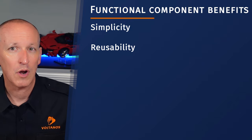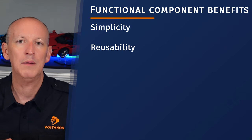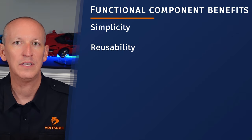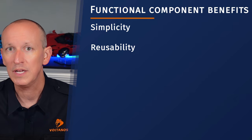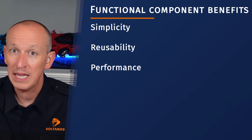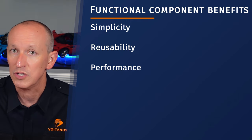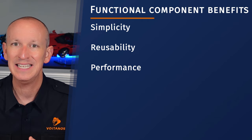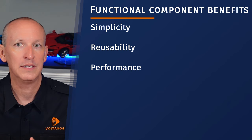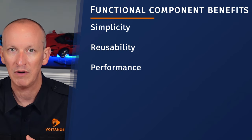The second reason is reusability. Functional components are more reusable because they can easily be composed and combined to create more complex components. They promote the use of composition over inheritance and encourage a more modular and scalable code structure. Third is performance — functional components can be more performant than class components due to their nature as pure functions. They don't have the overhead of managing instances and lifecycle methods. Additionally, functional components can be optimized with React's memoization and Hooks APIs to prevent unnecessary re-renders.